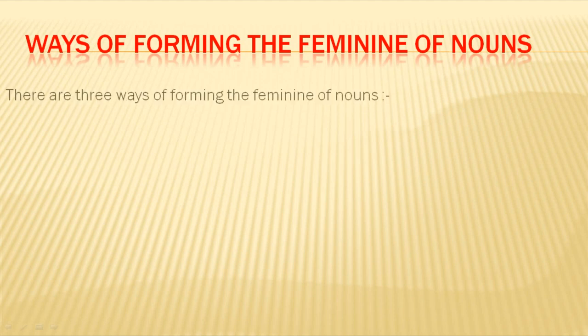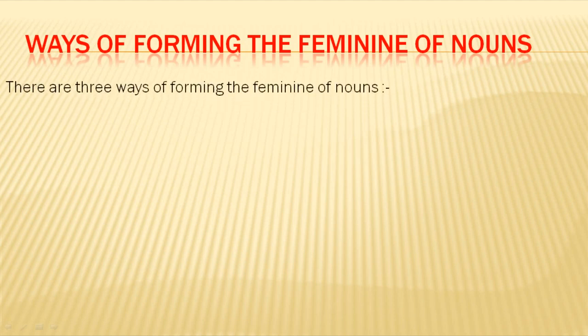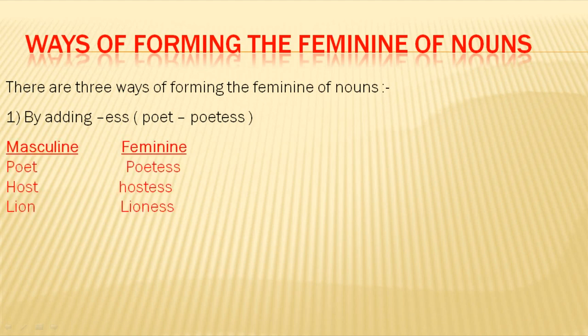Now we will know about ways of forming the feminine of nouns. There are three ways of forming the feminine of nouns. Number one: by adding ESS. For example, in masculine: poet becomes poetess in feminine. We have added ESS to poet. Host becomes hostess. Lion becomes lioness.